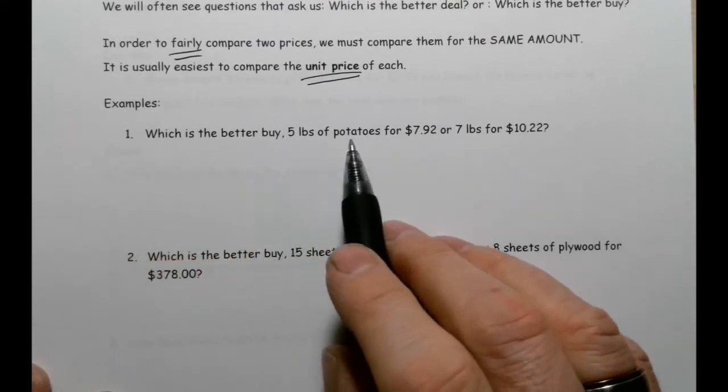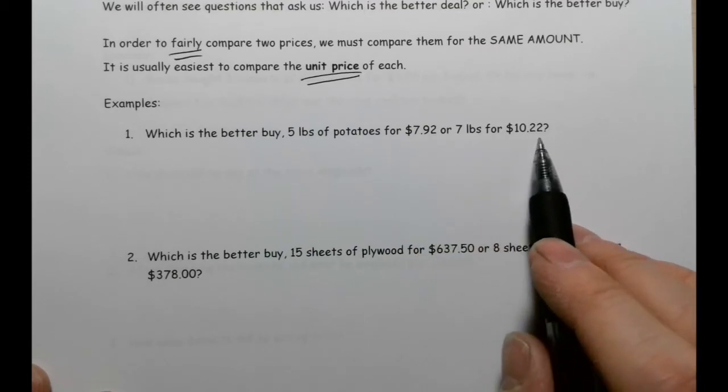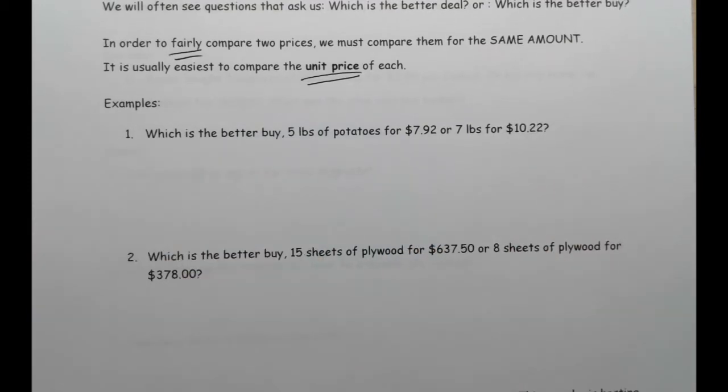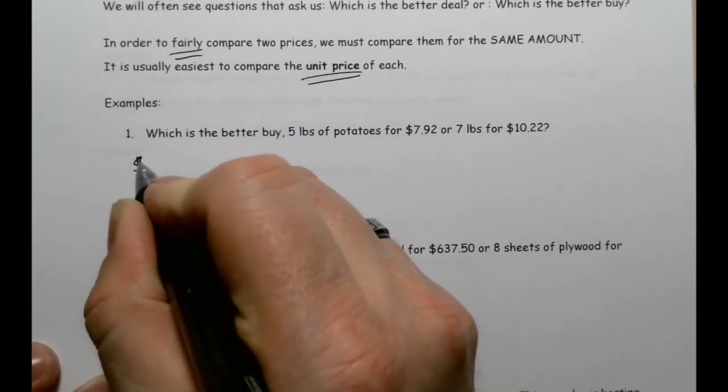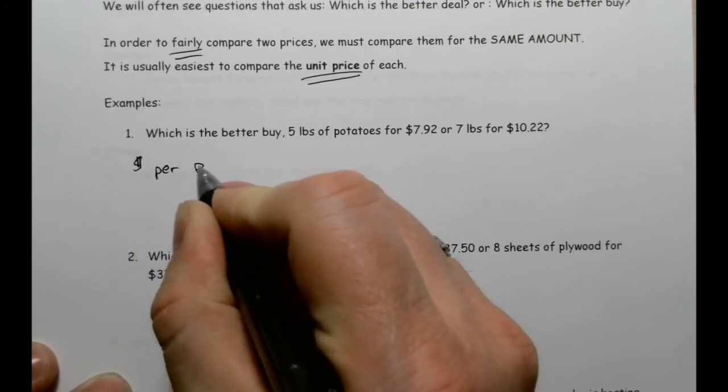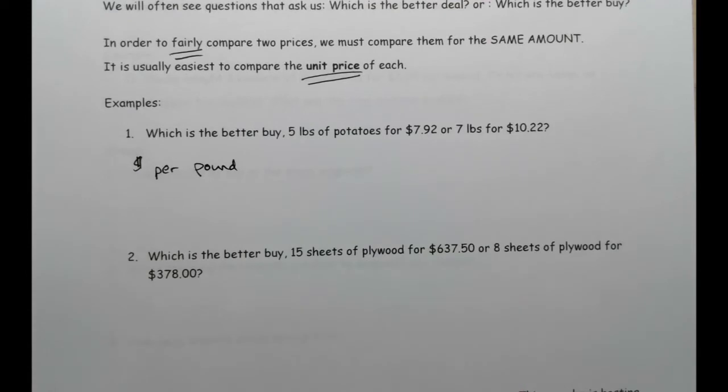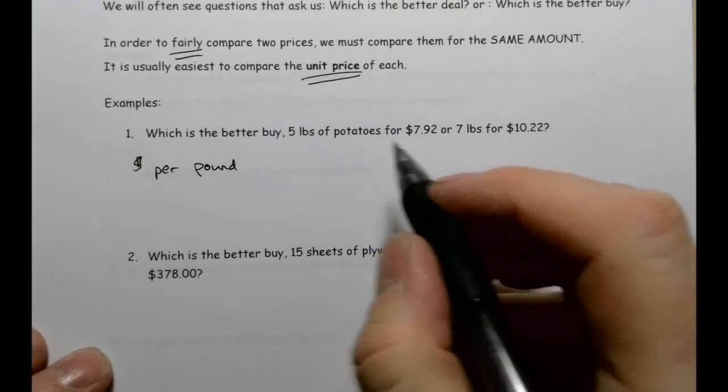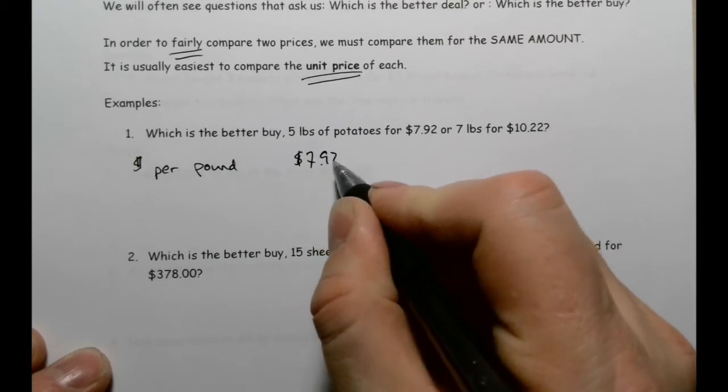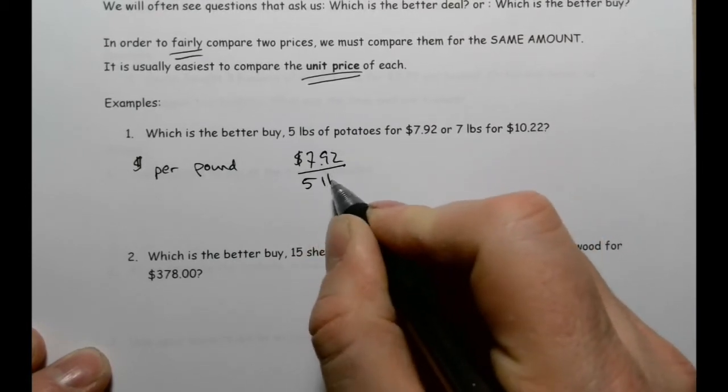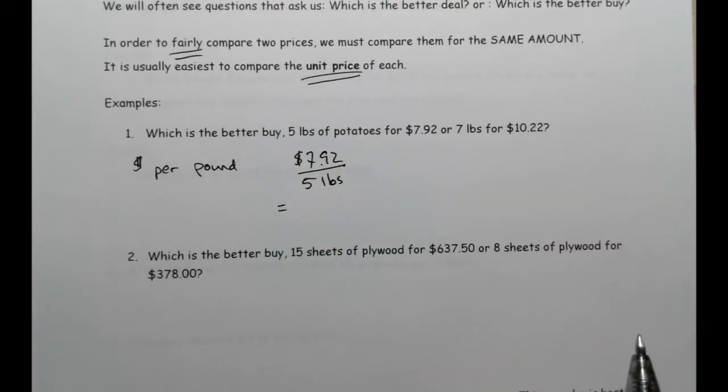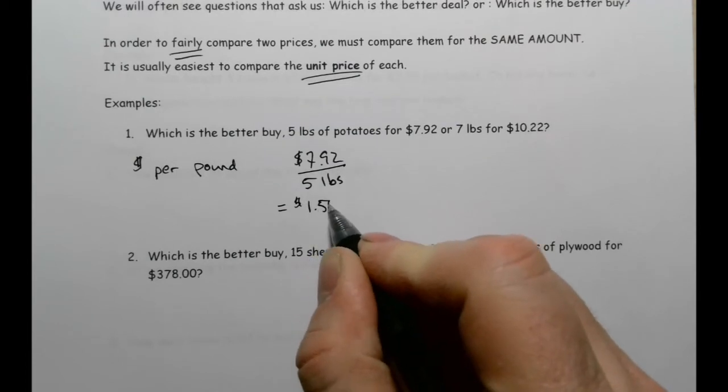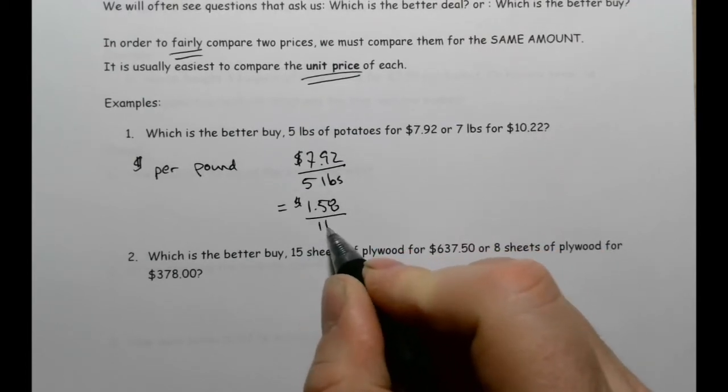For example, which is the better buy? Five pounds of potatoes for $7.92 or seven pounds for $10.22. So what I want here is money per pound. How much money per one pound? So this $7.92 per five pounds, what I'm going to do is divide, just like we were doing with those unit rates. $7.92 divided by five, and that's going to give me $1.58 per pound.